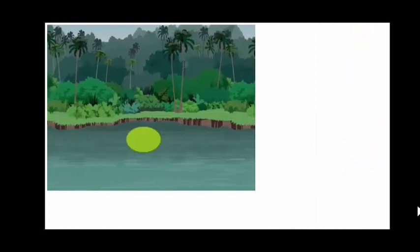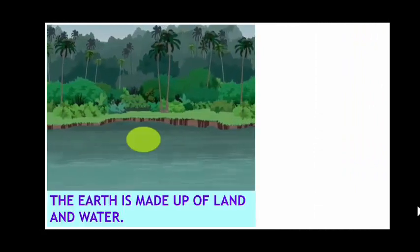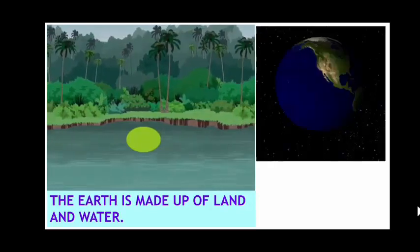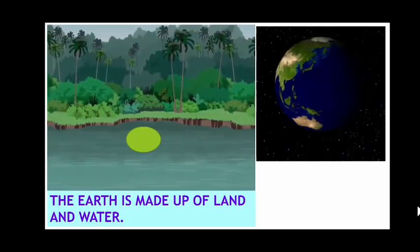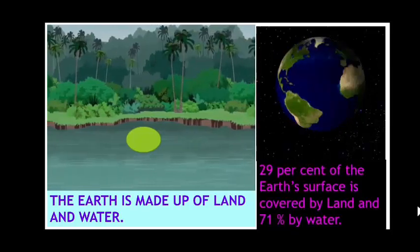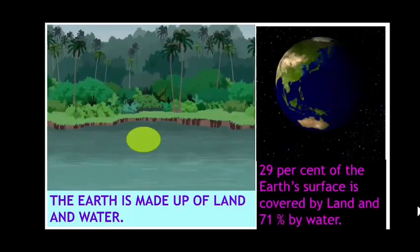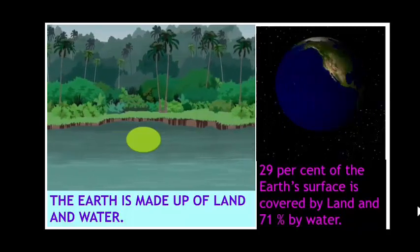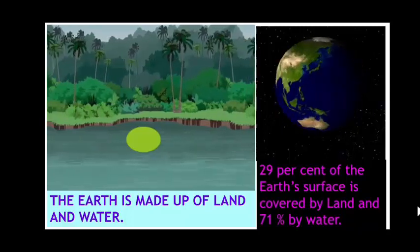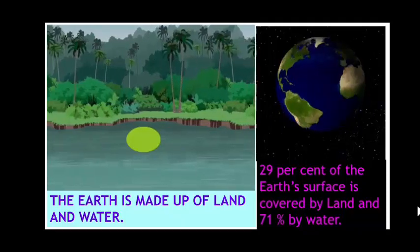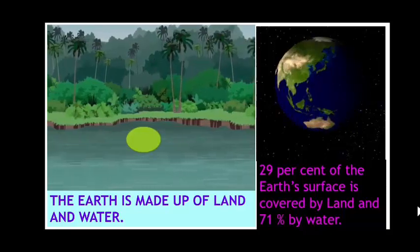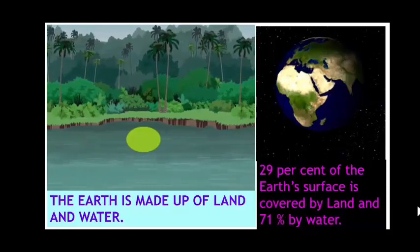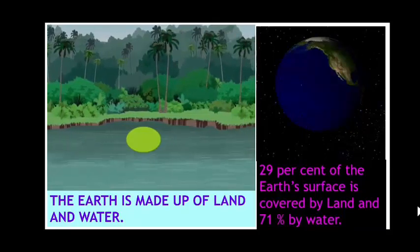As you can see, our earth is covered by land and water. So we can say that the earth is made up of land and water. 29% of the earth's surface is covered by land while 71% is covered by water. So there is a ratio in which our earth is covered by these two things — land and water — in a certain percentage.